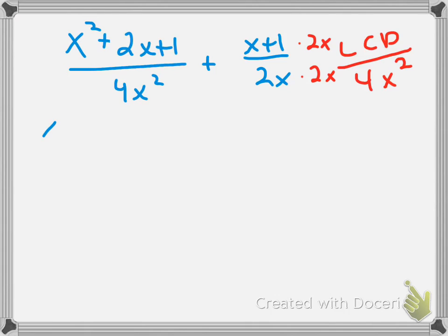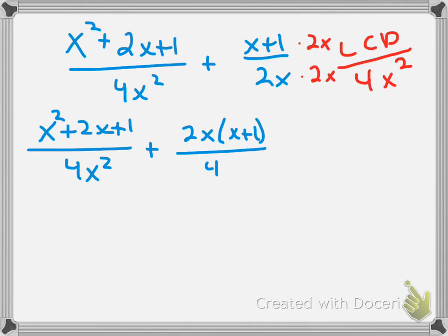So, I still have x squared plus 2x plus 1 over 4x squared. Now, I have 2x times x plus 1 over 4x squared.